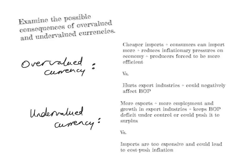I should have done this in the previous video but I forgot. I'm going to examine the possible consequences of overvalued and undervalued currencies. An overvalued currency is when the value of your currency is artificially much higher than it would be if it was left to market forces — higher than it would be under a floating exchange rate system. An undervalued currency is the opposite: its value is kept artificially too low compared to what it would be on the foreign exchange market in a floating exchange rate system.